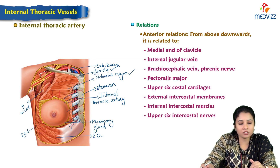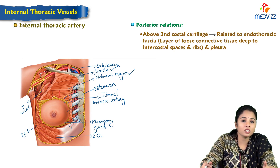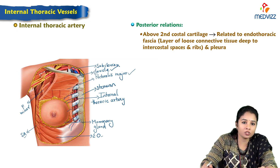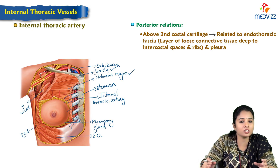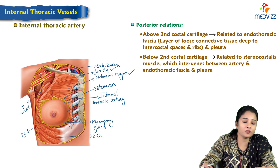Posteriorly, from above downwards, it is related to the second costal cartilage and to the endothoracic fascia — a loose layer of connective tissue which lies deep to the intercostal spaces, ribs, and pleura. Below the second intercostal space, it is related to the sternocostalis muscle, which intervenes between the artery and the endothoracic fascia and pleura.